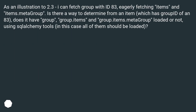As an illustration for 2.3: I can fetch group with ID 83, eagerly fetching items and items.metagroup. Is there a way to determine, from an item which has group ID 83, whether group, group.items, and group.items.metagroup are loaded or not — using SQLAlchemy tools? In this case all of them should be loaded.